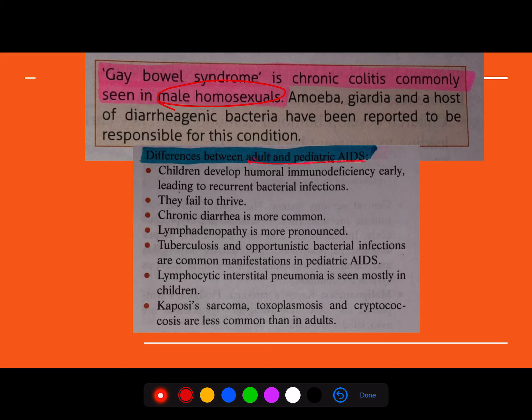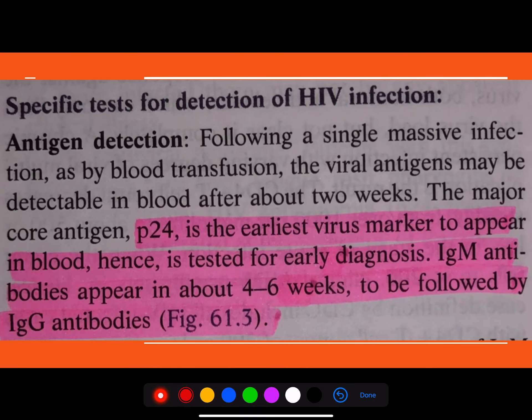So what is gay bowel syndrome is a very common thing that you can see in the case of male homosexuals. So what is the difference between adult HIV and pediatric HIV? Please do make a note about all these specific tests which are useful for detection of HIV, that is antigen detection test. The major core protein, p24, is the earliest viral marker to appear in the blood, hence it is useful for early diagnosis of HIV.